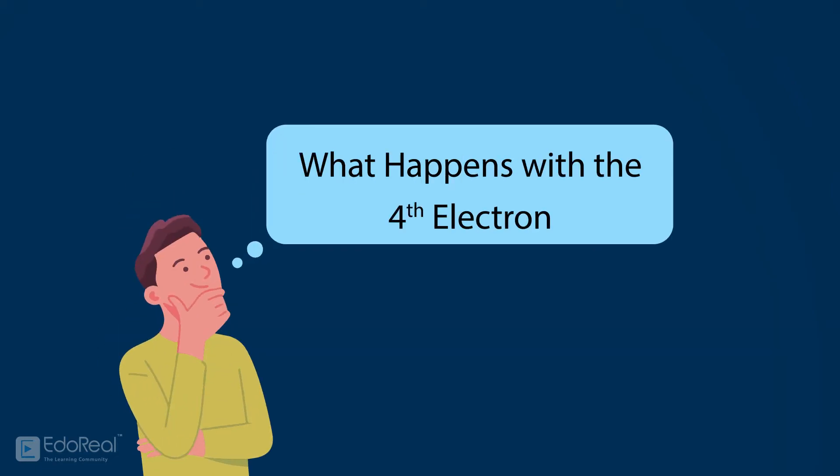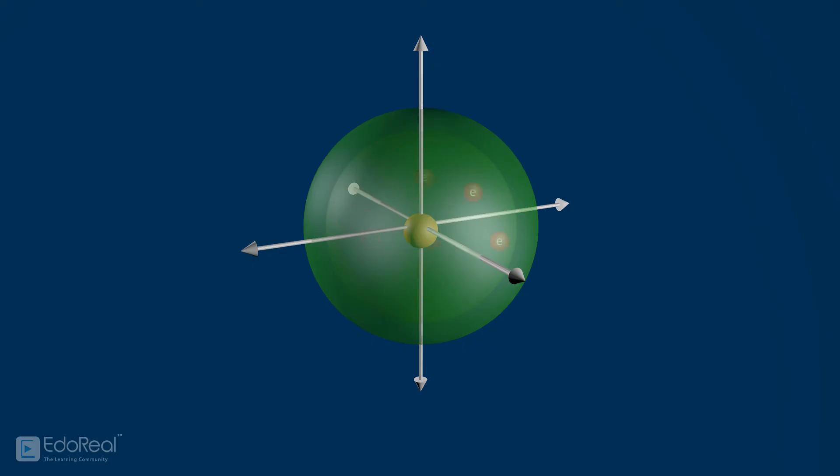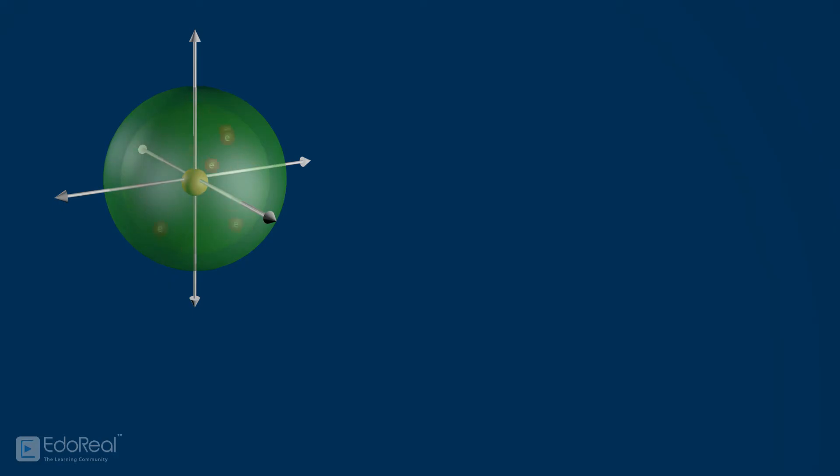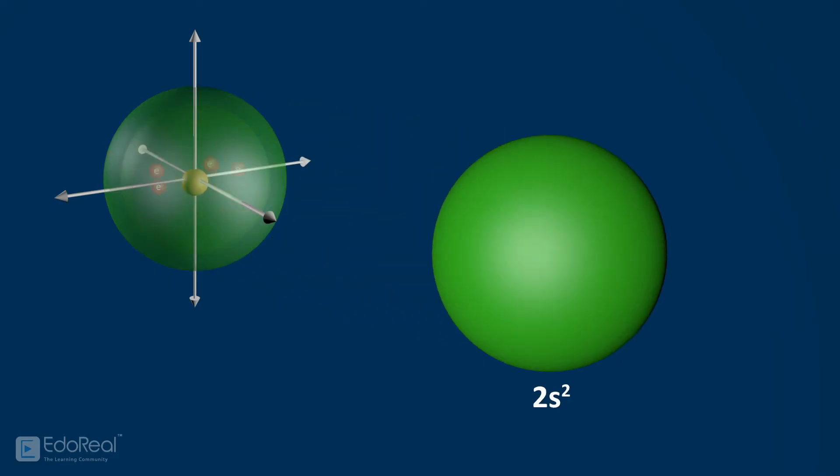Now, what happens with the fourth electron? Fortunately, it is found in the same spherical space as the third electron. These two electrons are found in other larger spherical space around the nucleus. So, this orbital is represented as 2s2.